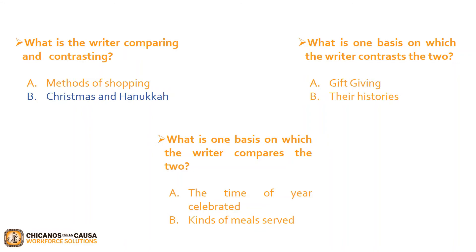Next question: what is one basis on which the writer compares the two? A, the time of the year celebrated; or B, kinds of meals served? The correct answer is A, which is supported in the passage by the discussion regarding the time of the winter solstice in the Northern Hemisphere, close to when each holiday is celebrated. And now for our last question: what is one basis on which the writer contrasts the two? A, gift giving; or B, their histories? The correct answer is B.